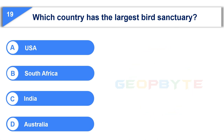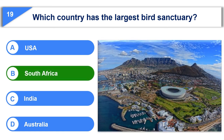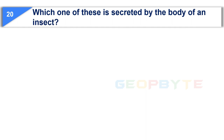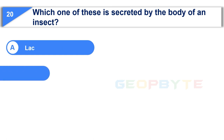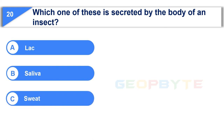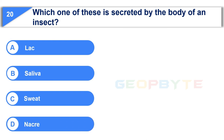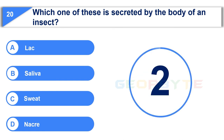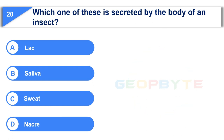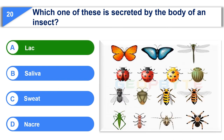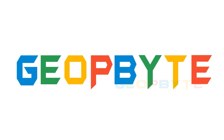Your time is up and the correct answer is Option B: South Africa. The last question is: which one of these is secreted by the body of an insect? Option A: Lac. Option B: Saliva. Option C: Sweat. Option D: Nackery. Your time is up and the correct answer is Option A: Lac.